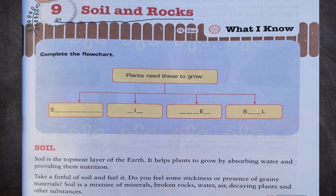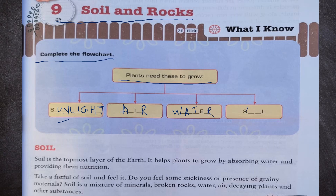Soil and Rocks. First, complete the flow chart: plants need these to grow. Plants need first sunlight, second air, third water, and fourth soil.